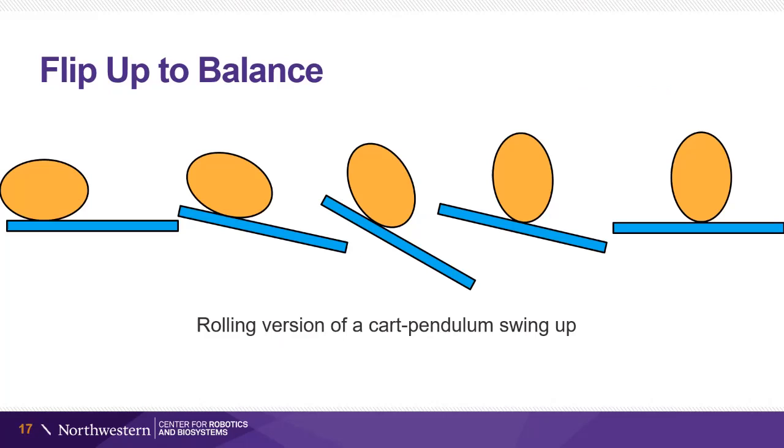We now demonstrate a flip-up to balance motion. The goal is to roll the object and then balance it about the unstable equilibrium. This is similar to the classic cart pendulum swing-up, but with a non-holonomic constraint at the contact.